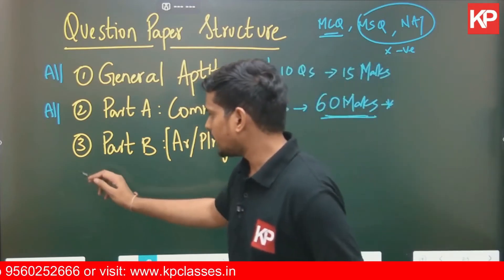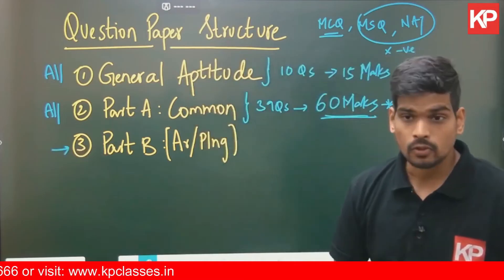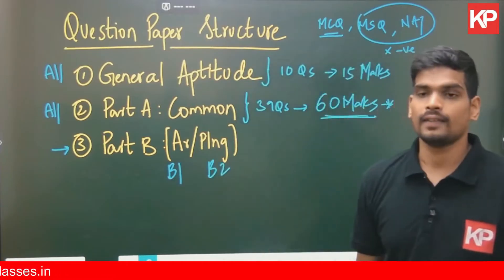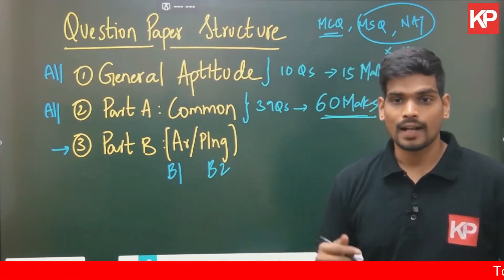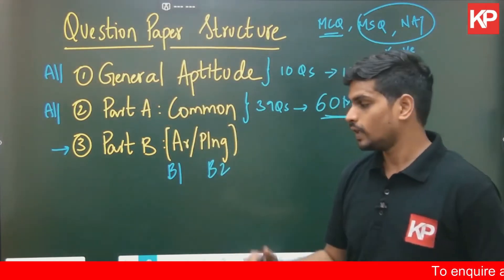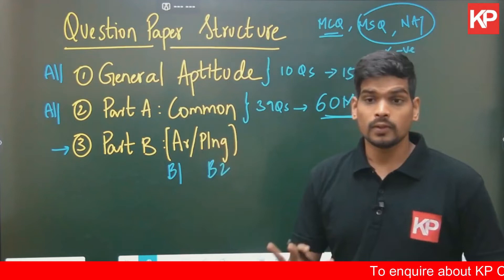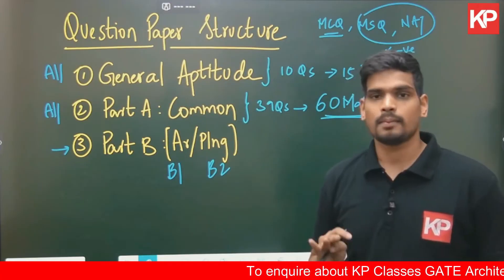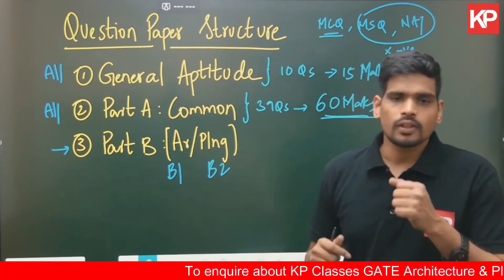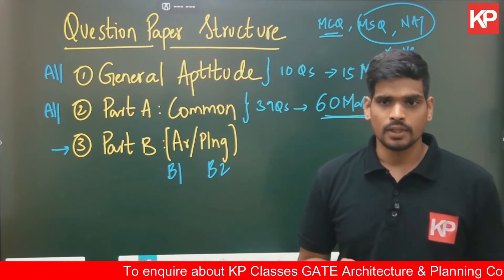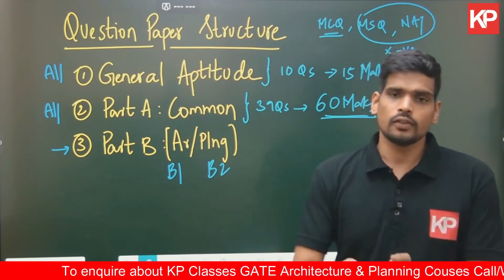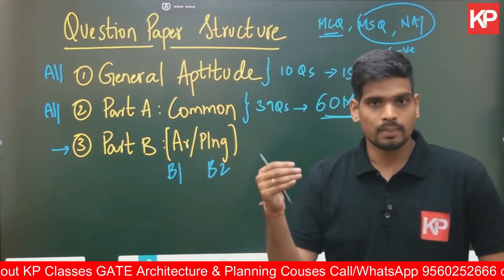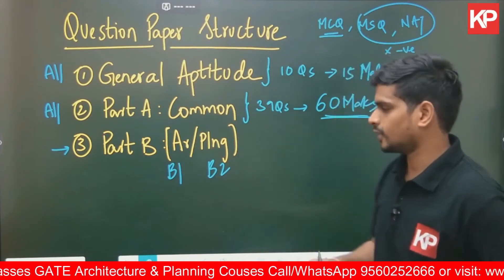Finally, Part B gives you a choice: you can select either Part B1 (Architecture) or Part B2 (Planning). You do not need to declare which part you will attempt while applying for the examination — the GATE application portal does not require this. You can take the decision of selecting which part to answer during the examination itself, choosing whichever suits you.